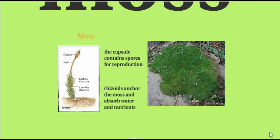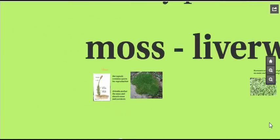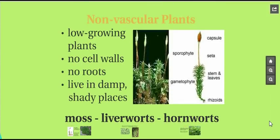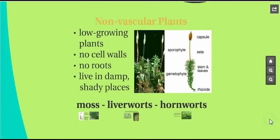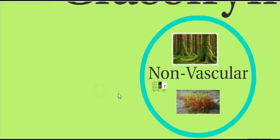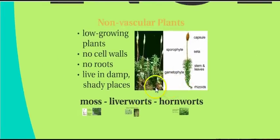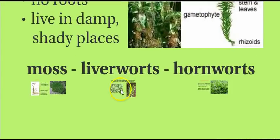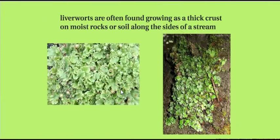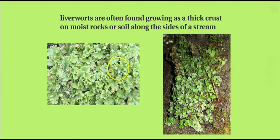Another example of a plant with non-vascular tissue is liverworts, and they're given their name based on the fact that they look like the inside of a liver. Just like moss, they're found growing in wet areas, damp areas, areas that are shady — a lot of times along the sides of creeks and other streams and rivers.